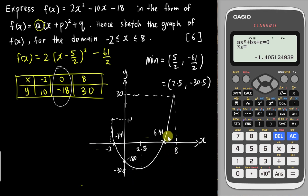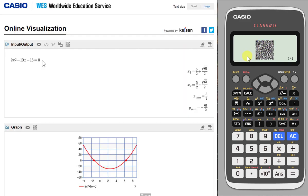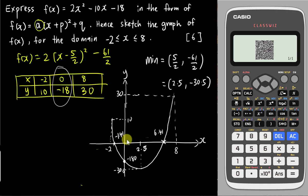If you want to verify your graph using the calculator, press Shift then QR. A QR code will appear — scan it with your smartphone. It will take you to the Casio website which shows you the exact graph. In the exam you can't use your phone, but this is a great feature to double-check your sketch when doing exercises.